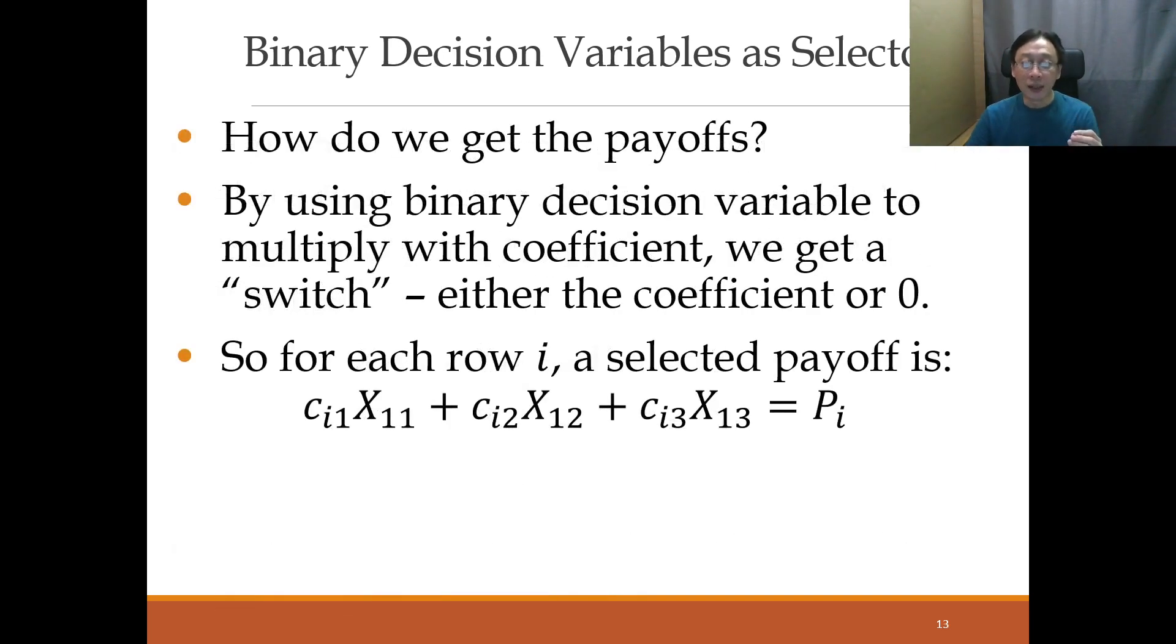Now, when that is done, we need to extract the payoff, that means the coefficient. Now, we can do that by sum-producing the binary values because one of them will be 1 with the coefficients on top. So when we do that, it will become kind of a selection of the CIJs. So for example, suppose when we solve it, it turns out to be 0, 0, 1. Then because 0 times anything is 0, we end up getting C13 times 1, which is C13. So we end up with selecting C13. So this sum-product of binary variables with payoffs, with the coefficients, automatically allows us to select a particular coefficient along that row.